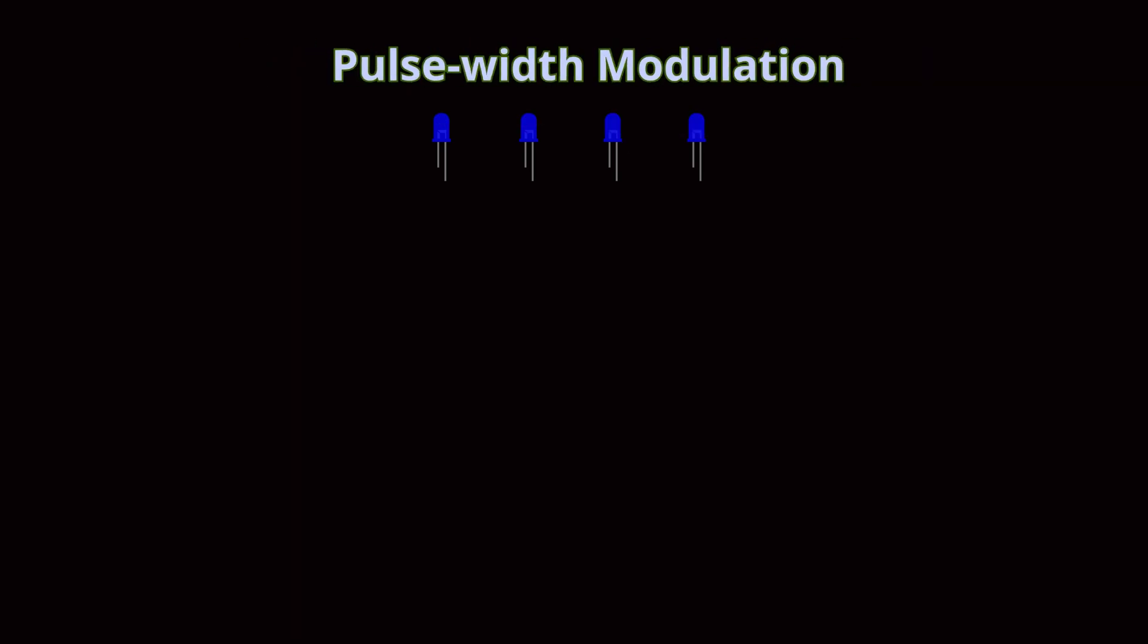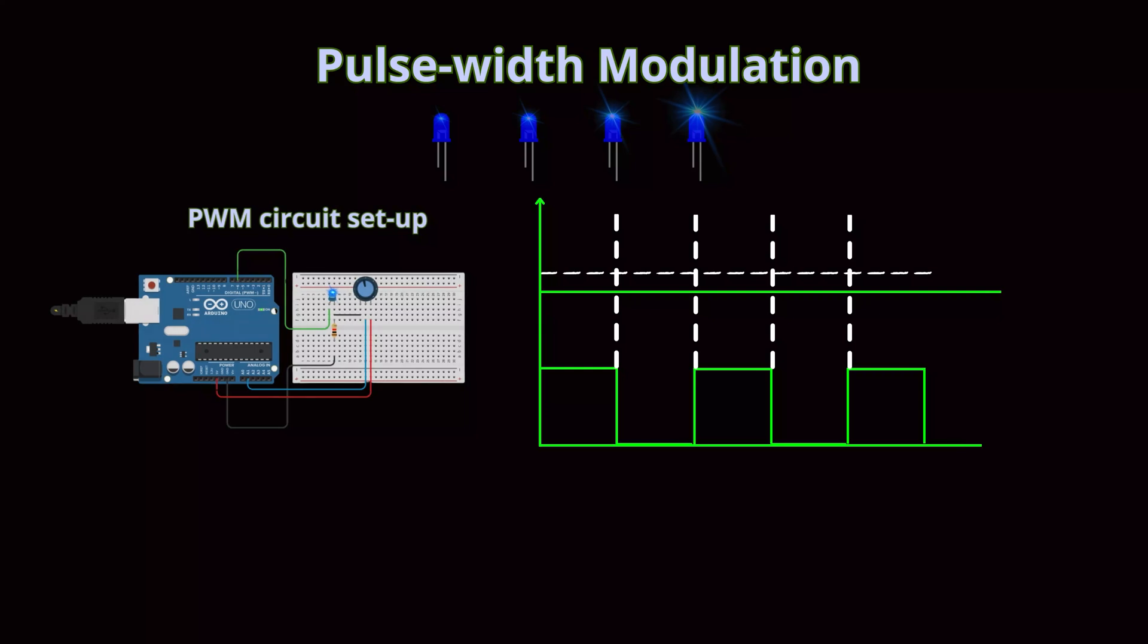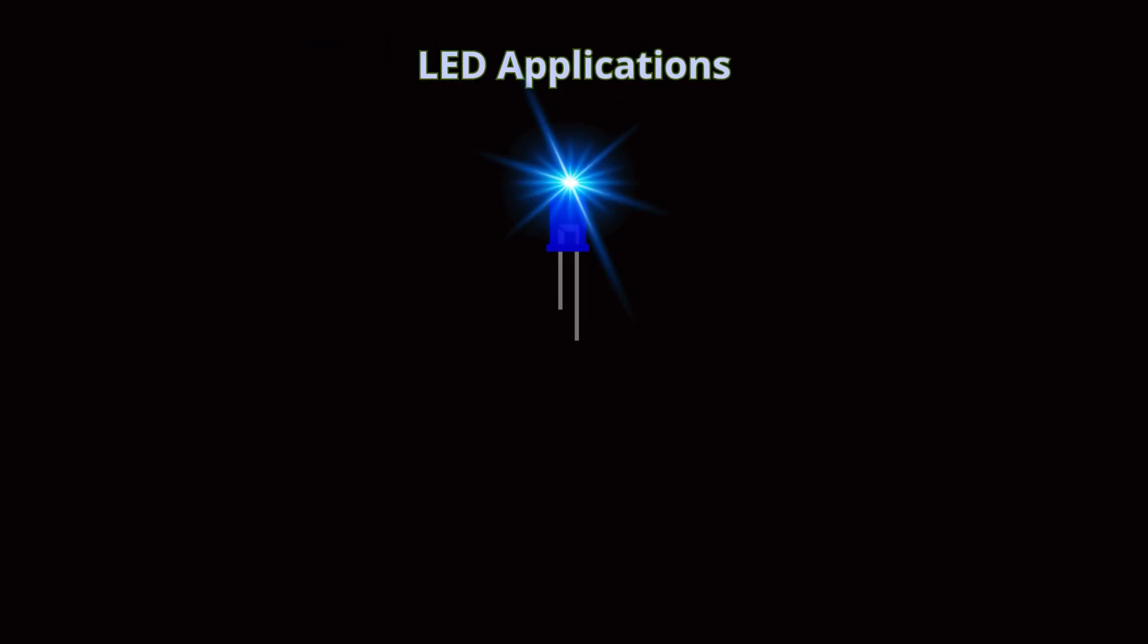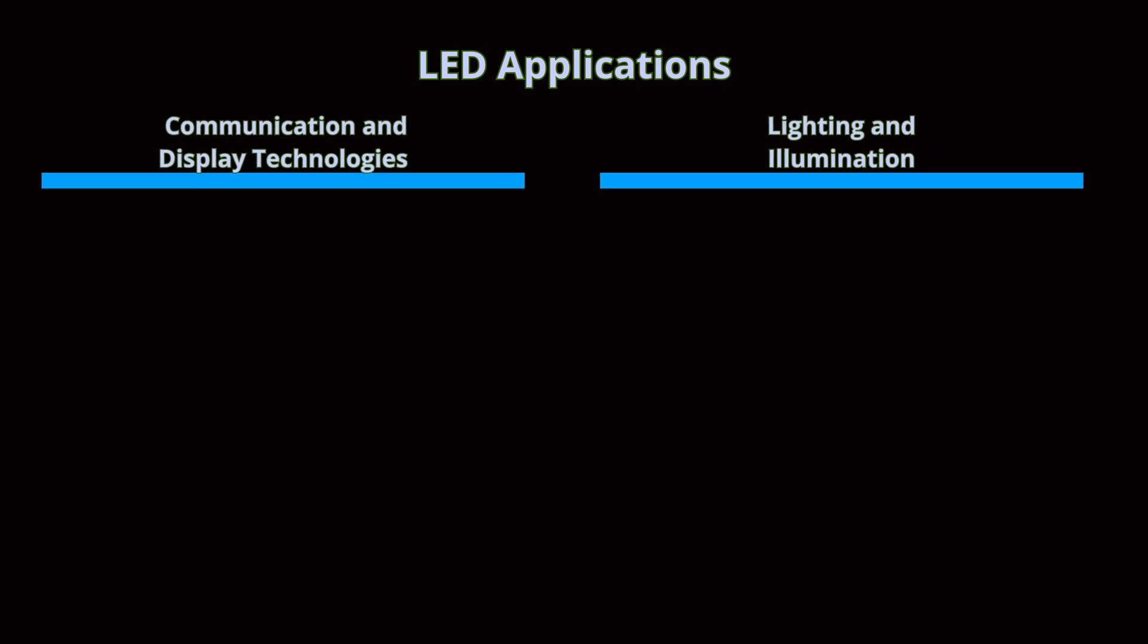Another method used to control brightness is called pulse width modulation, or PWM. By rapidly switching the LED on or off at different intervals, the human eye perceives a dimmer or brighter light. This technique is used in many modern devices, from phone screens to car headlights, to adjust brightness dynamically without wasting energy.